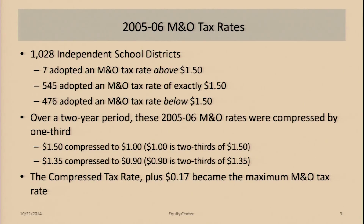In 2005-6, which was the base year for the system we're currently using, there were 1,028 school districts. It's now 1,019 because of consolidations. But basically, of those 1,028, there were seven districts that had an adopted M&O tax rate above $1.50.